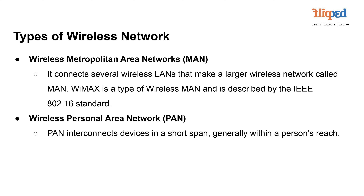WiMAX is defined by the IEEE 802.16 standard and is designed to provide high-speed wireless broadband access over relatively long distances. WiMAX can cover several miles, making it suitable for connecting various LANs within a city or metropolitan region. A Wireless Personal Area Network (PAN) is a type of wireless network that interconnects devices within a short span, typically within a person's reach or personal space. PANs are designed for close-range communications and are commonly used for connecting personal devices and gadgets.